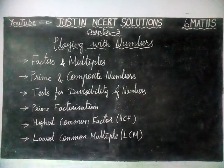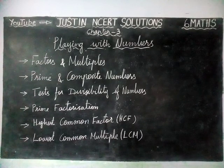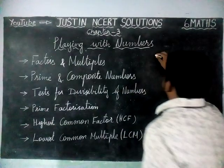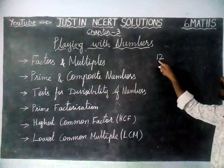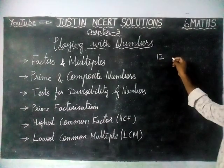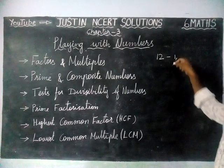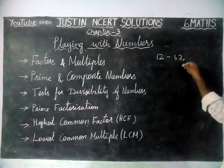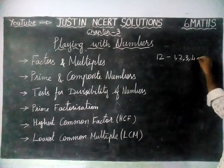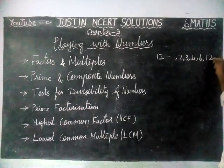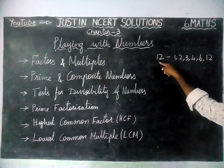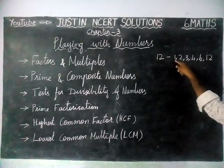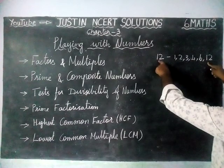First one is factors and multiples. A factor of a number is an exact divisor of that number. For example, if we are taking a number 12, what numbers will divide 12? 1 will divide, then 2 will divide, 3, 4, 6 and 12. When we are dividing by these numbers, we will not get any remainder. We will get the remainder as 0. So these numbers are exact divisors of 12.